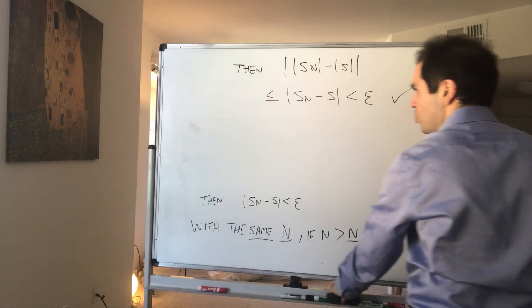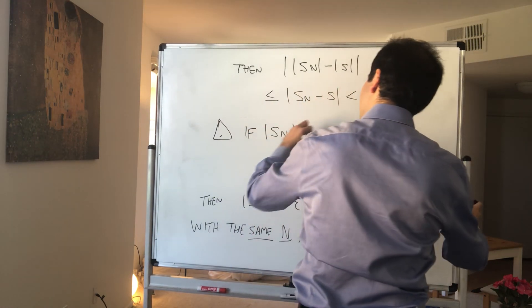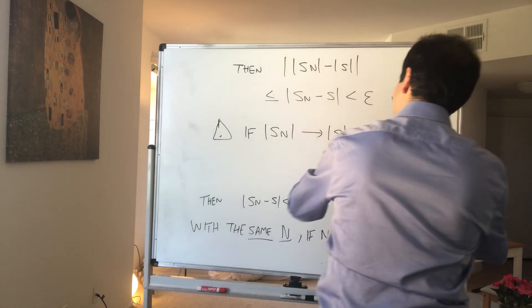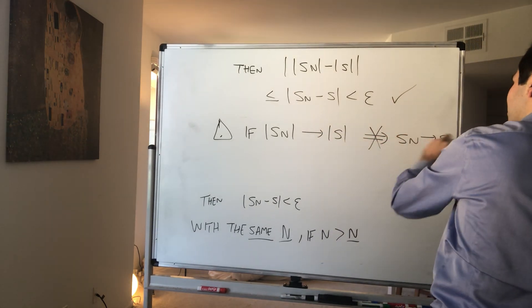And the only thing I also wanted to add is the converse is not true. So careful. Therefore, if the absolute value of s_n converges to s, this does not imply that the original sequence converges to s.